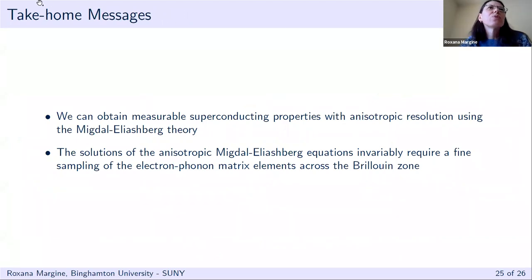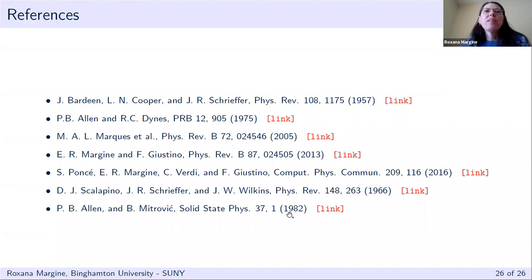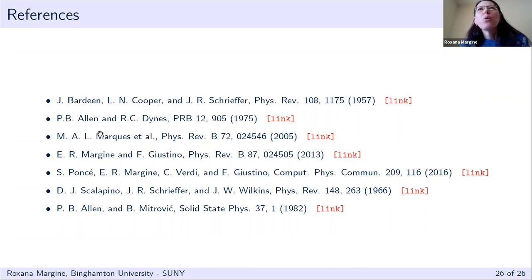In summary: with the Migdal-Eliashberg theory implemented in EPW we can obtain measurable superconducting properties with anisotropic resolution, but solutions of the anisotropic equations invariably require fine sampling of electron-phonon matrix elements across the Brillouin zone. Key references include the BCS paper, the Allen-Dynes formula, and papers on SCDFT.